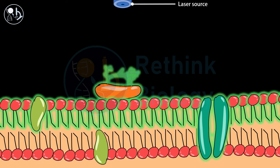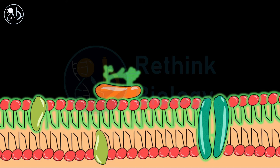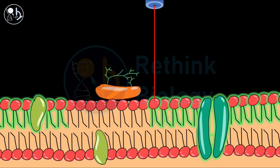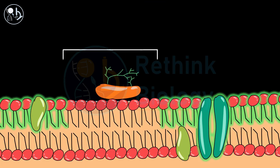Now, a strong laser light is used to bleach a specific area of the membrane. This process is known as photobleaching. After photobleaching, the area will appear dark.